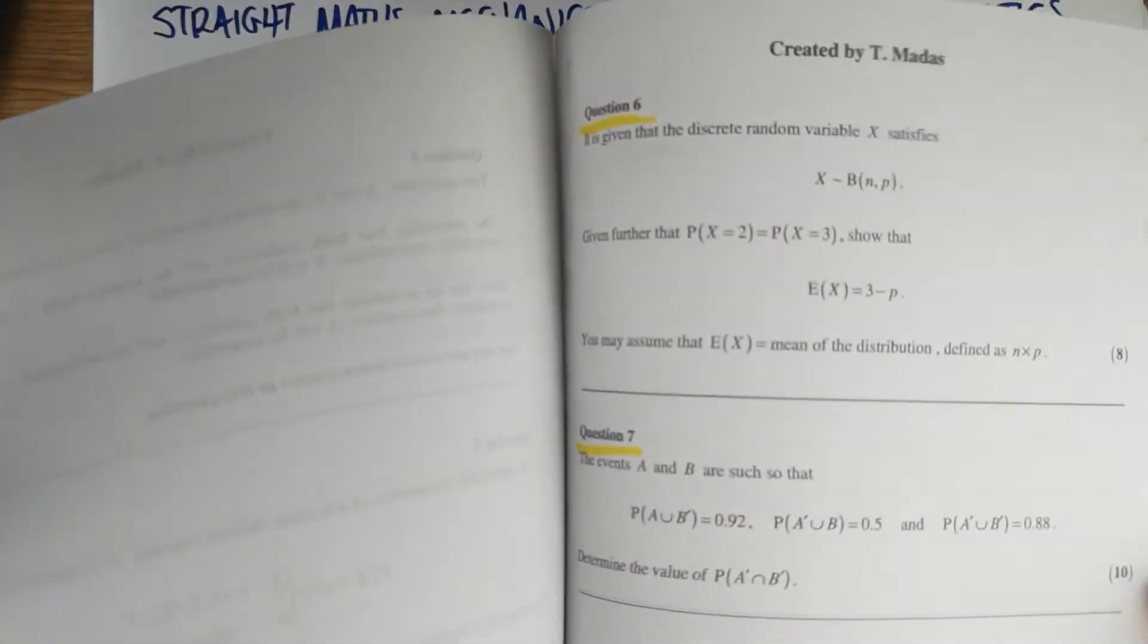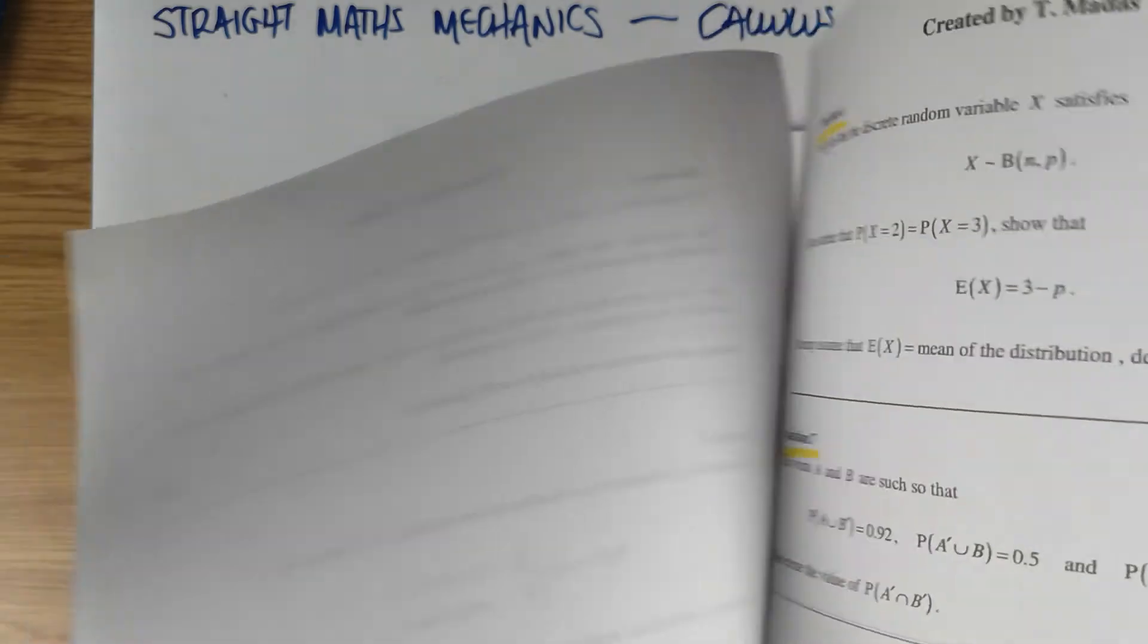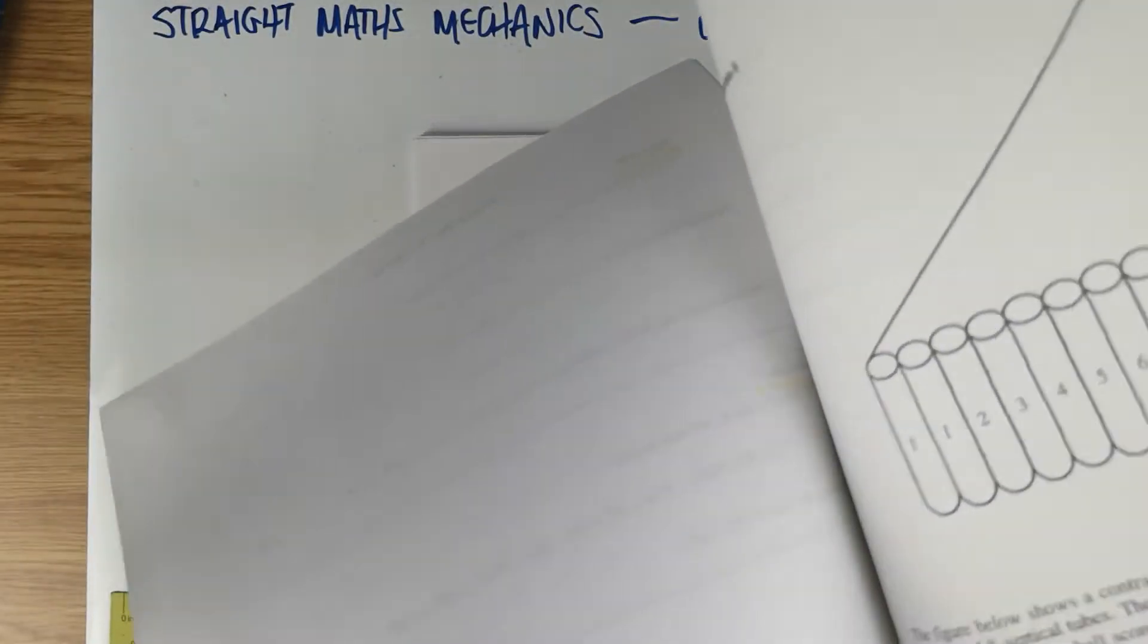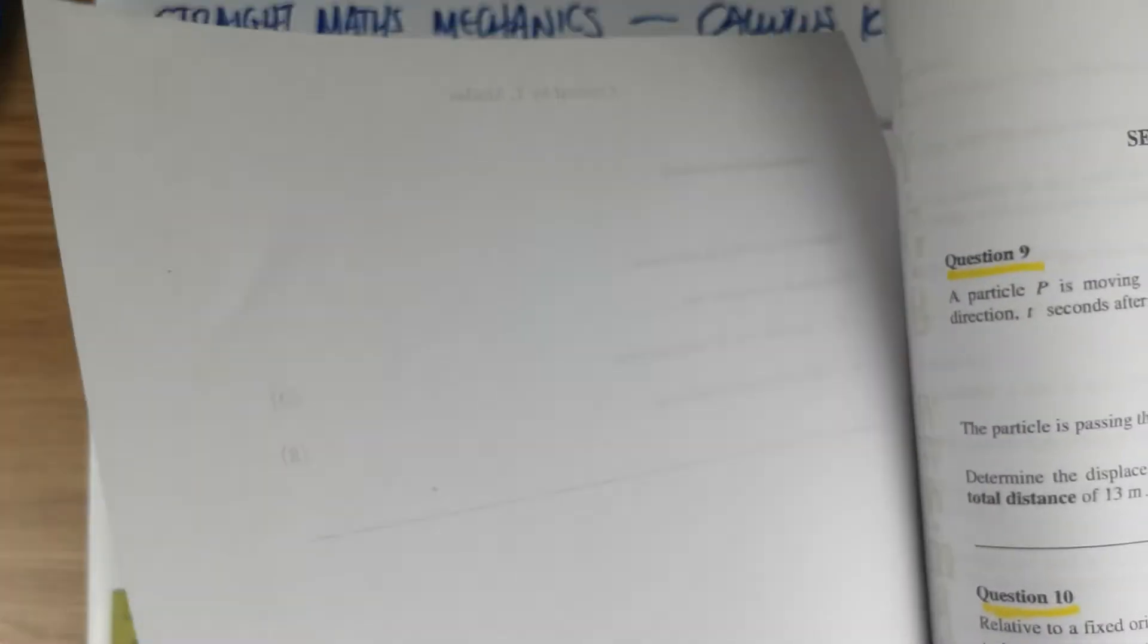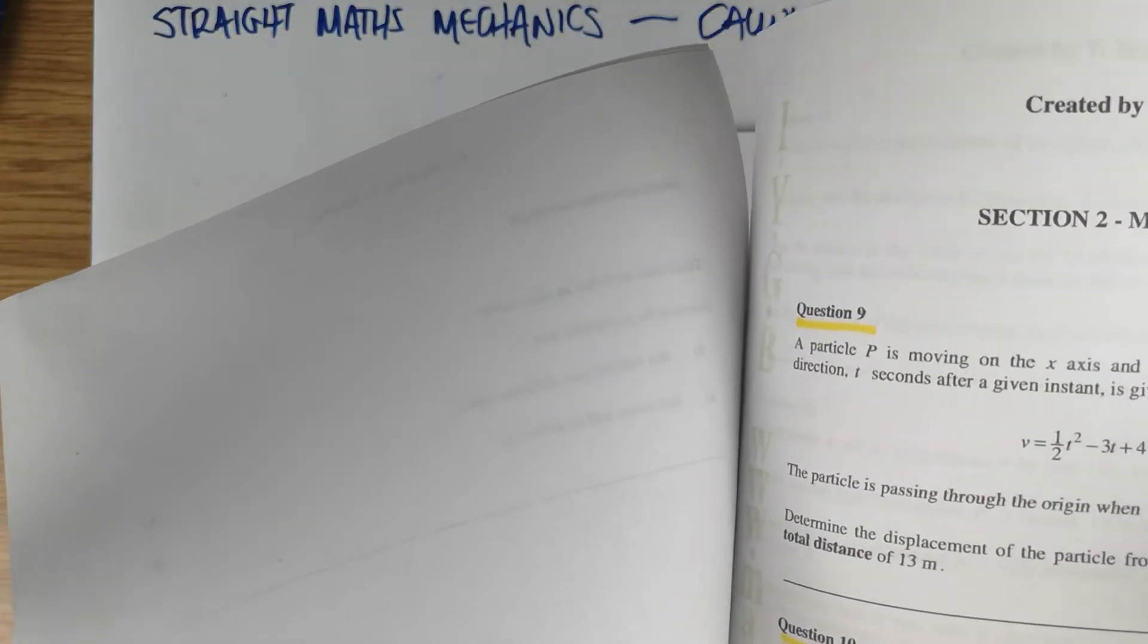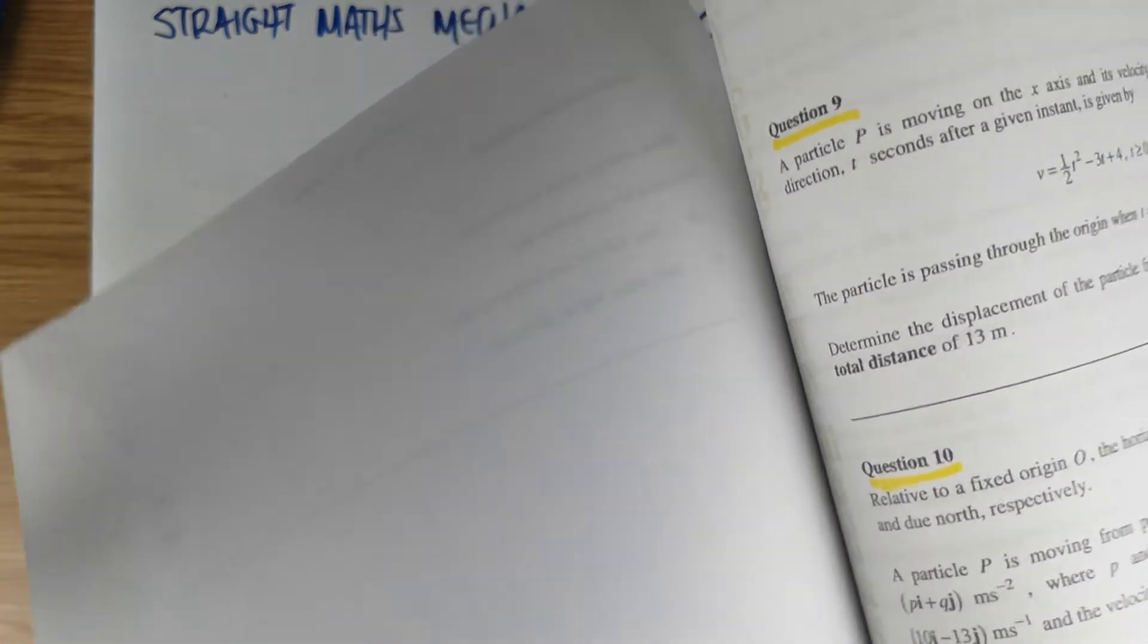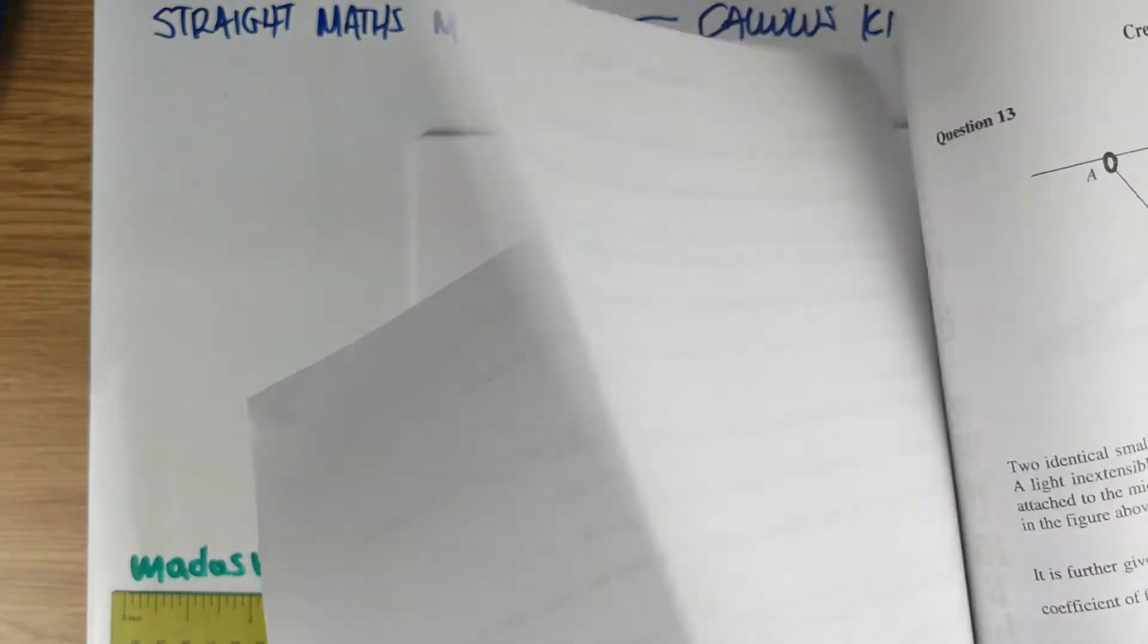I've done two questions from the statistics section, Binomial and Venn diagram, and I've done also the two first questions of the mechanics, which are quite interesting. One was on vectors, the other one was on calculus kinematics, and I think I picked one more question.